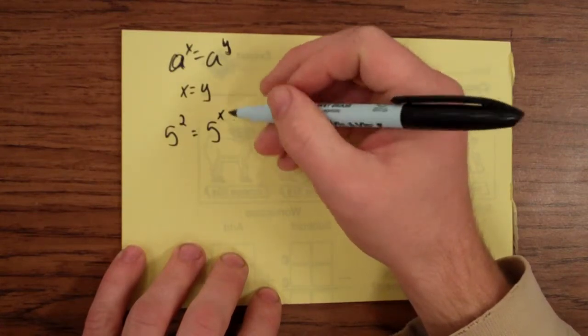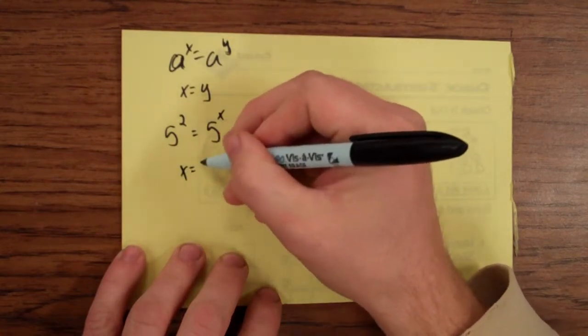So if this is an x here, and you're saying what would I have to put there? Well, you would have to say that x is 2.